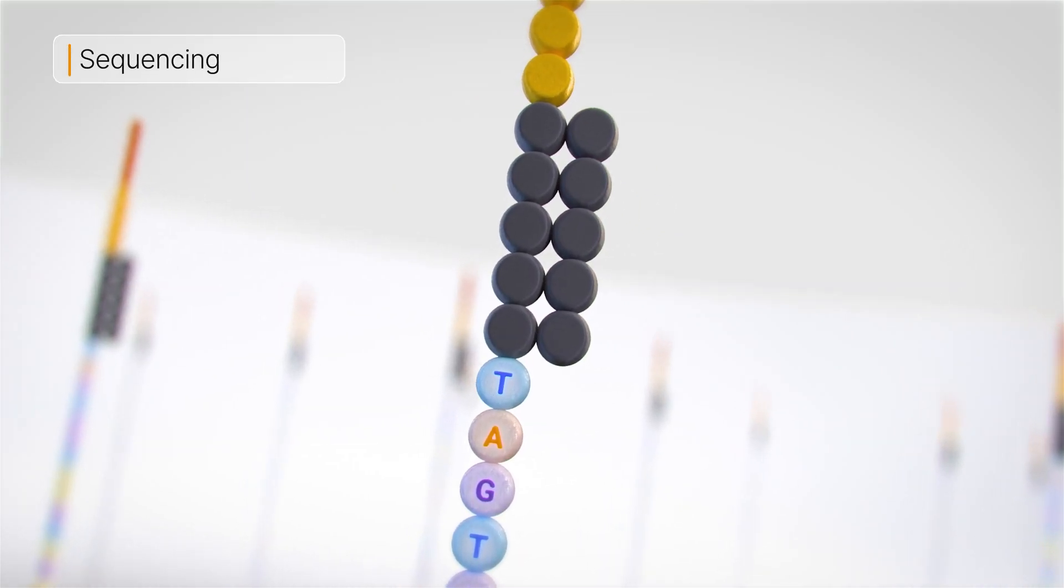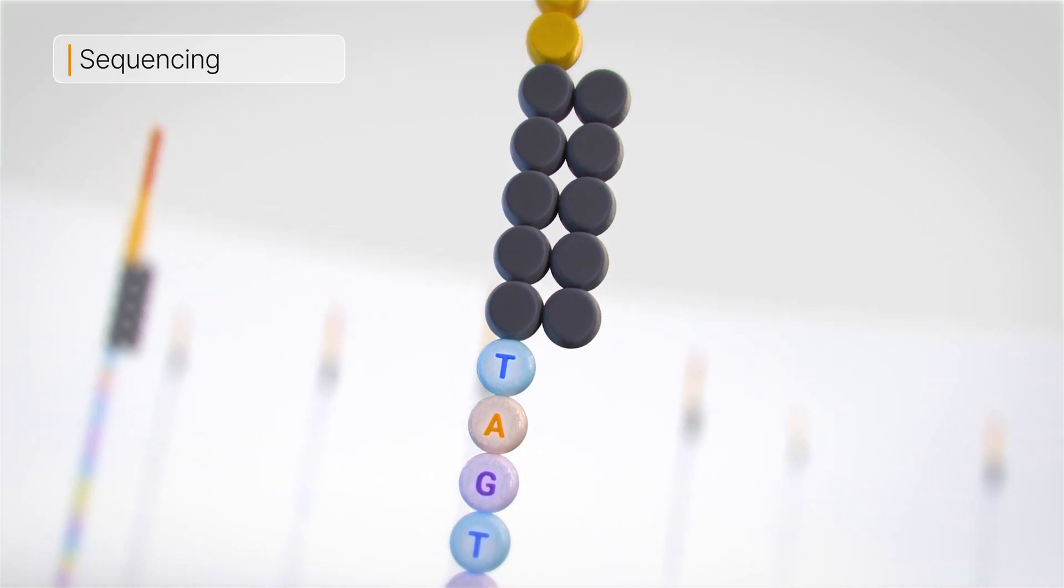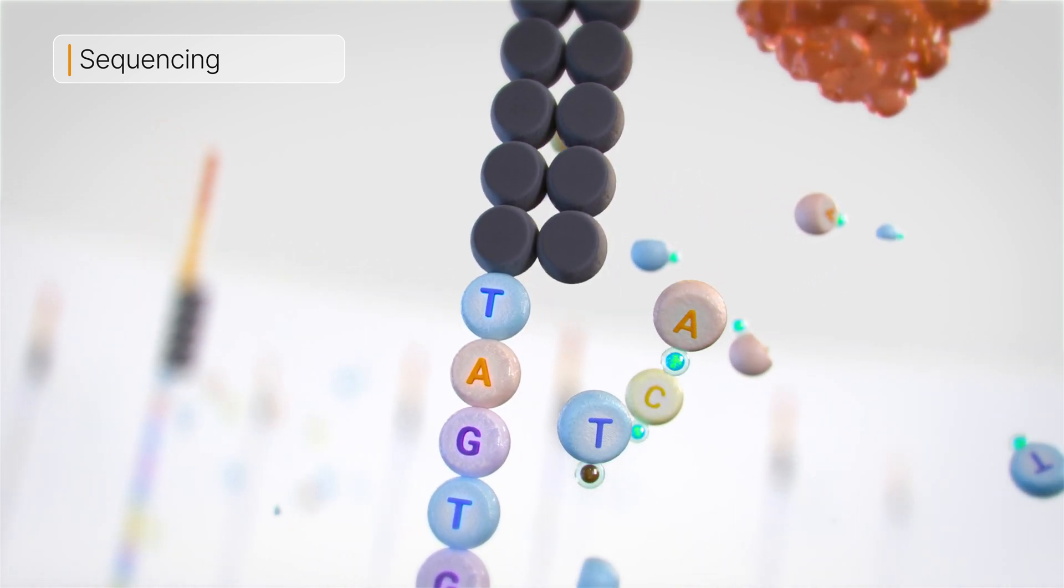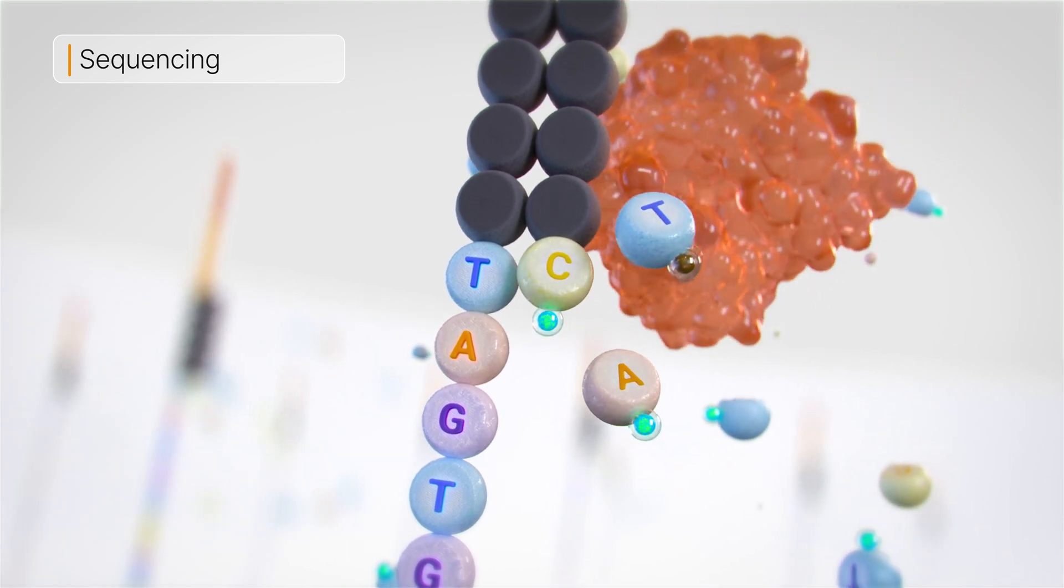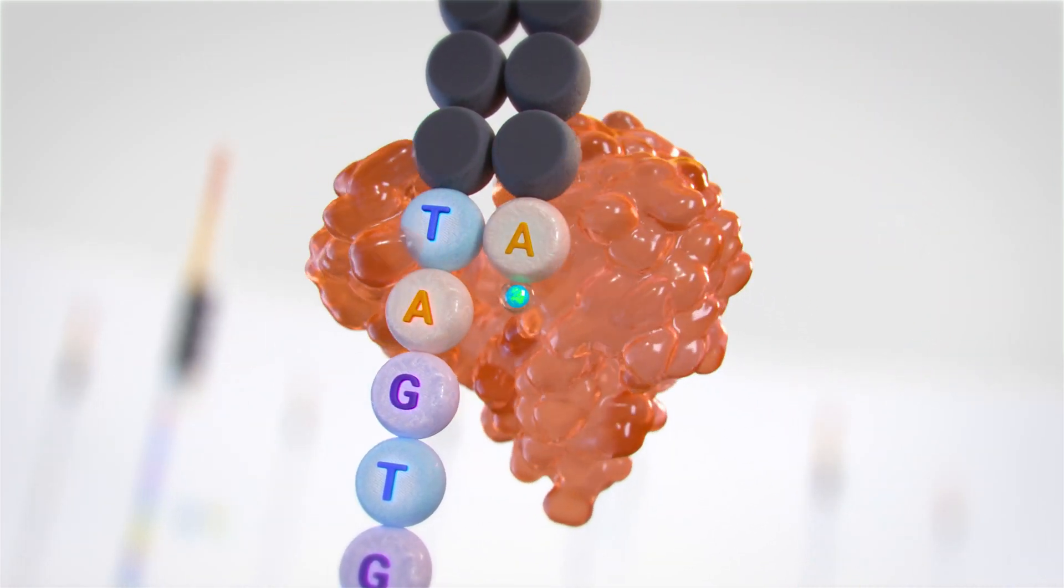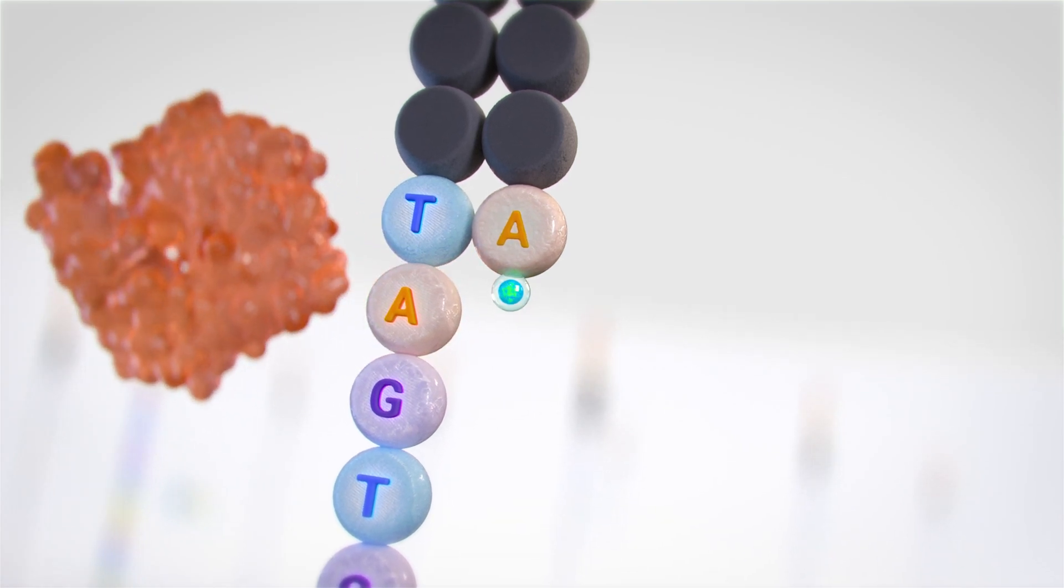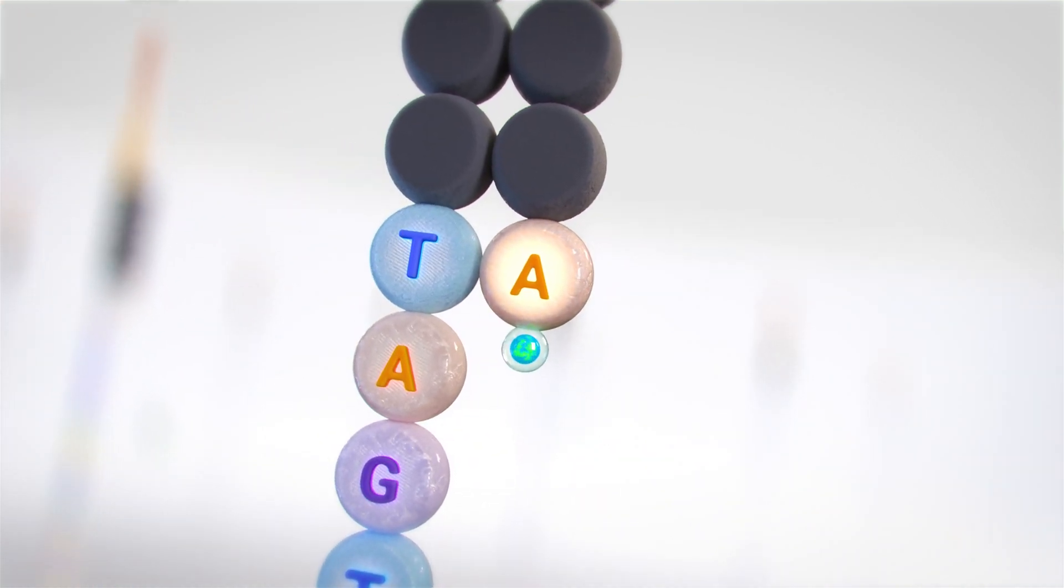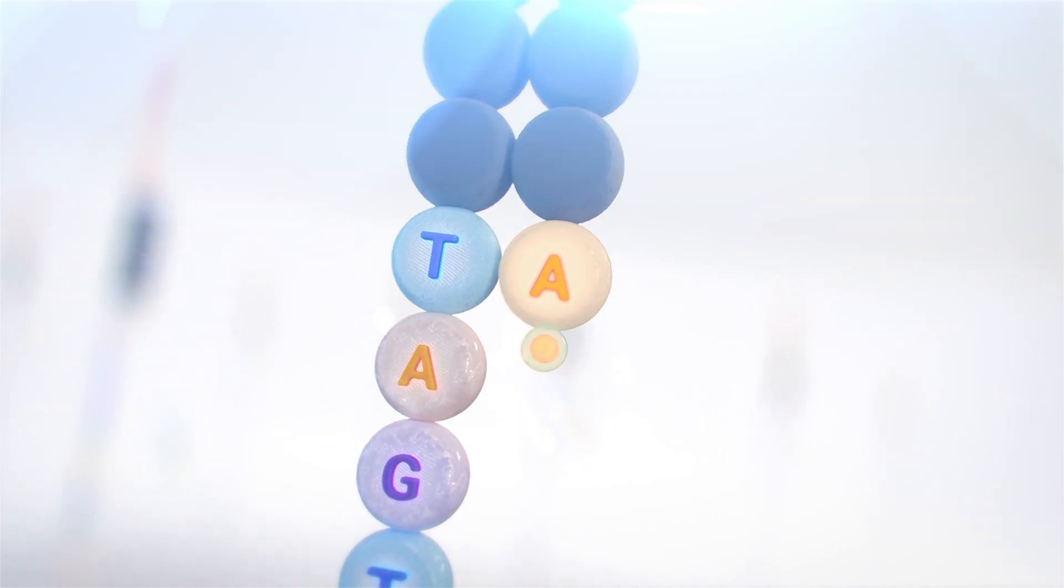Sequencing begins with the extension of the first sequencing primer to produce the first read. With each cycle, a mix of fluorescently tagged nucleotides are available for addition to the growing chain. Only a single fluorescent base is incorporated that is complementary to the sequence of the template. After the addition of each nucleotide, the clusters are excited by a light source and a characteristic fluorescent signal is emitted.